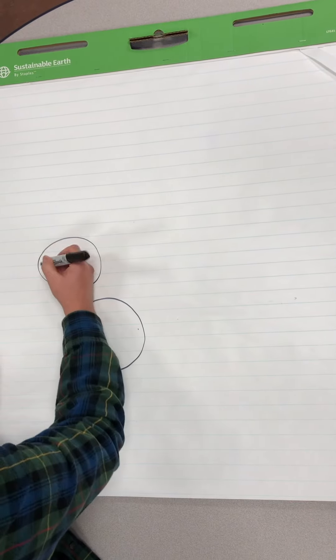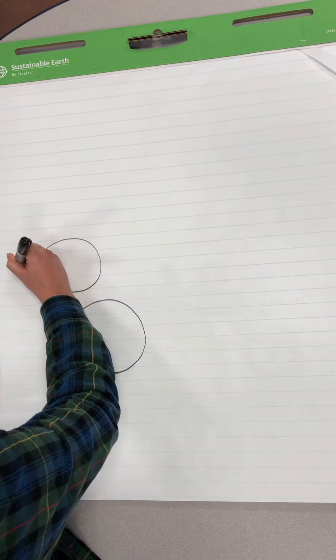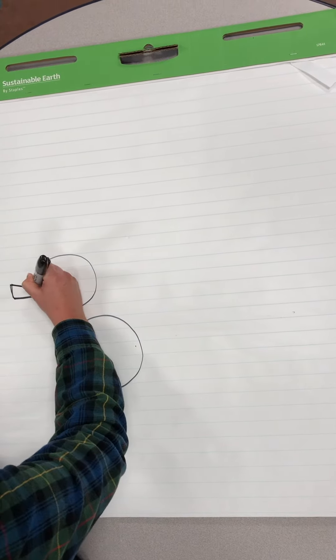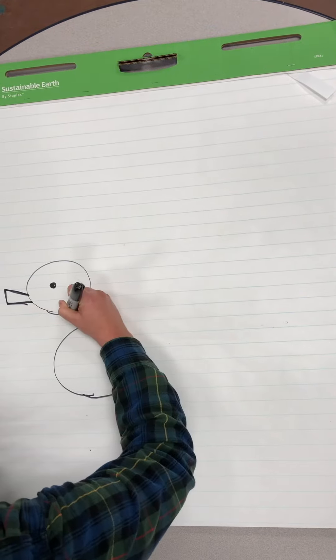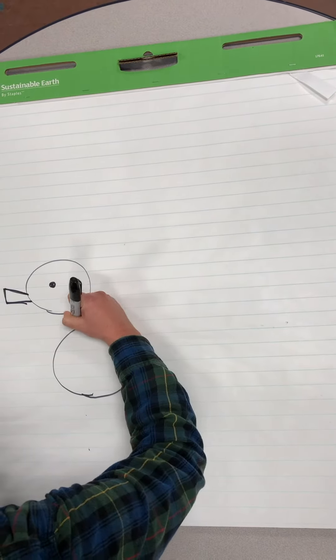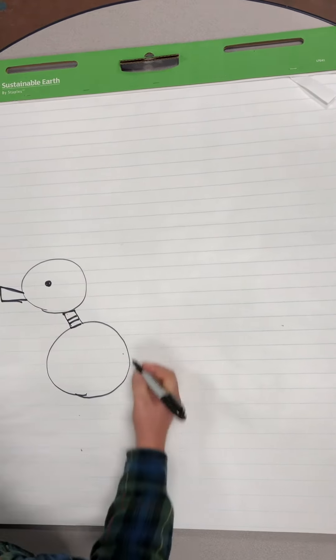And then for the bill part, draw a wedge shape, kind of like what you would put in a door, like a door stopper. And then a dot for the eyes and then a rectangle to make the neck to kind of connect it.